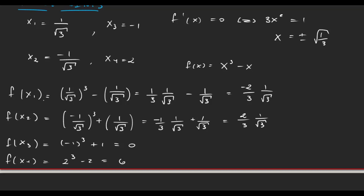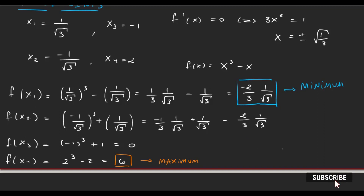Now all we have to do is find the greatest and lowest of all the values. The lowest is easy because it's the only negative one, so that is the minimum. The greatest value is 6. For the critical point x2, we know the derivative is 0 there, so it could be a local maximum or minimum, but it's not the absolute maximum. We'll learn about how to identify those sorts of points later.